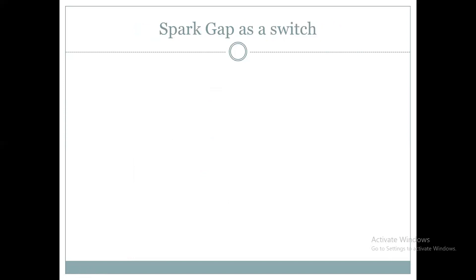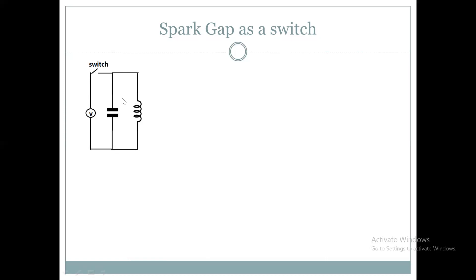तो अब यह spark gap as a switch कैसे behave करता है, उसको हम देखते हैं। Normally जब आप electronics या power electronics के अंदर switch use करते हैं, तो आप capacitor को charge करना चाहते हैं — switch on करते हैं, capacitor charge होता है। जब switch off करते हैं तो capacitor किसी load के through discharge होता है, for example inductor। यह damping circuit है — capacitor inductor को energy देगा, inductor capacitor को देगा। इस तरह हमारे पास required frequency की voltage generate होती है।